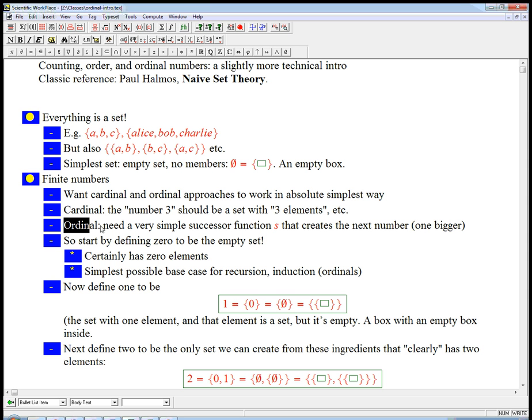Ordinal, what we need is a very simple successor function, some function that creates the next number, basically plus one, but it's even more basic than addition. So I'd like to just use S as this, or use a little superscript plus for this. I need to have some very simple function that goes to the next number. So that's going to put them in order. It's going to be able to create the next thing. It's also the foundation of induction and recursion, which we'll talk about more later.